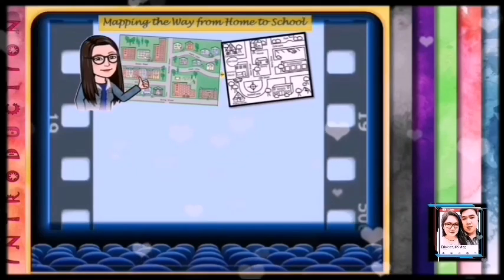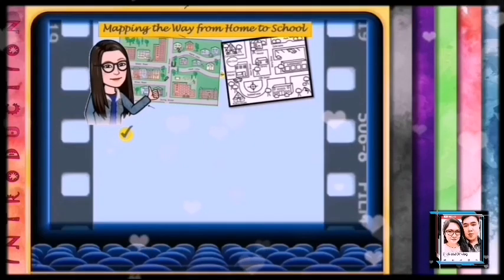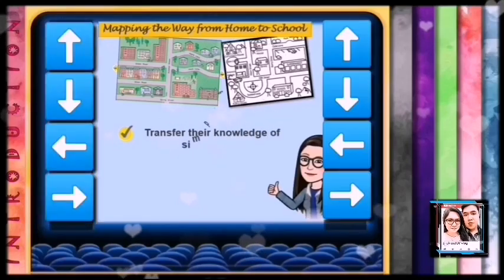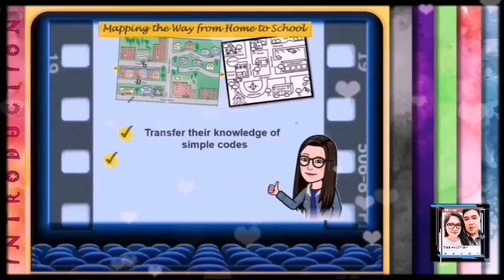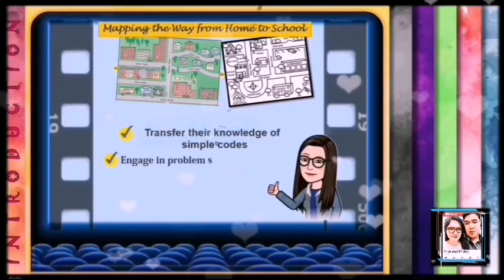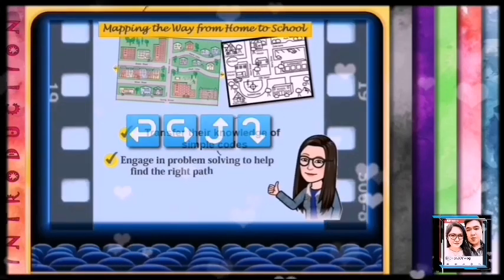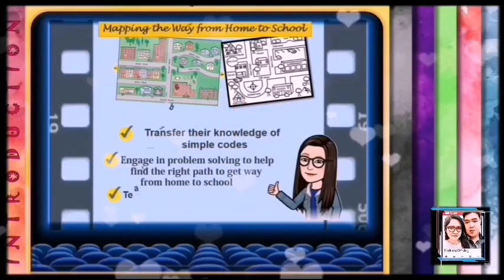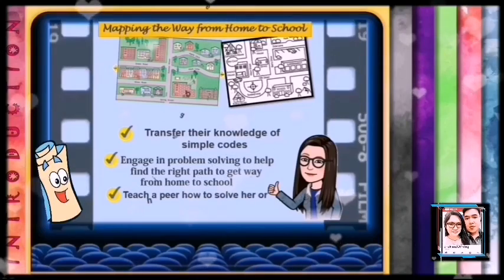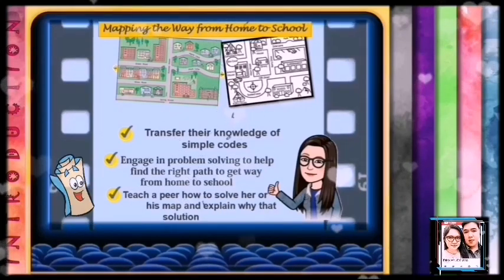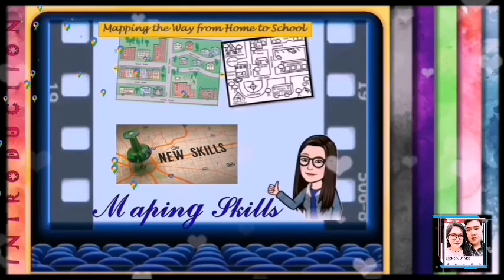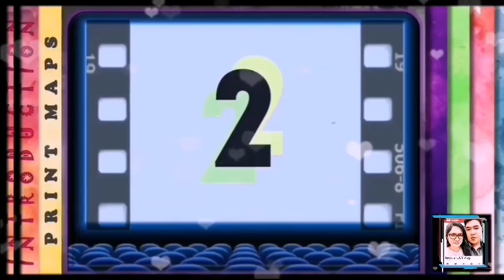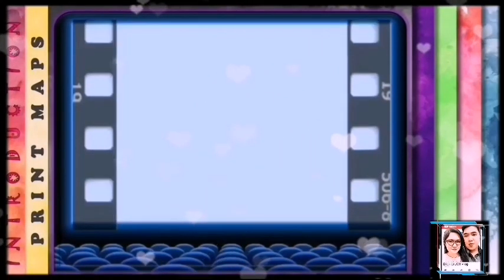Students will be able to transfer their knowledge of simple directions — for example, up, down, left, or right — and engage in problem-solving to help find the right path from home to school. Students are taught how to solve their map and explain why that solution is correct. Using these strategies, the students combine their knowledge of code to practice using maps.